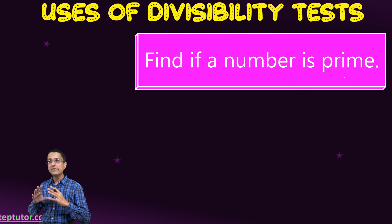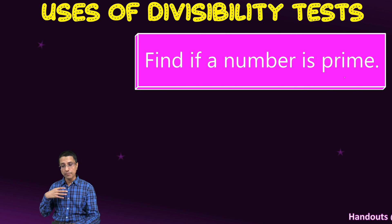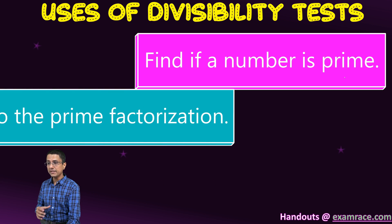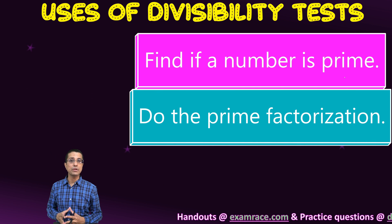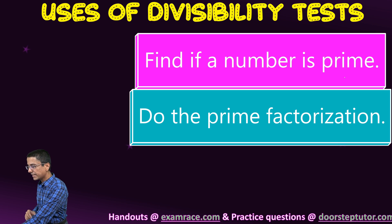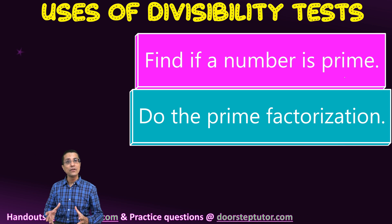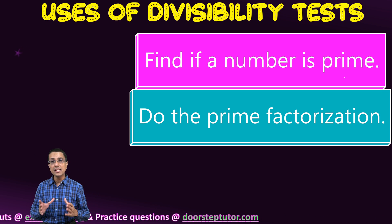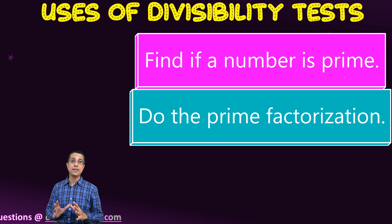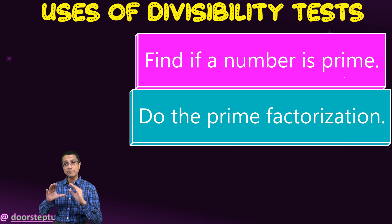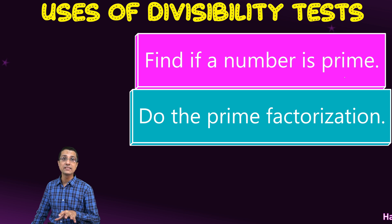These divisibility tests are very important, and with these combination rules you can apply them to bigger numbers — for example, using the divisibility tests for 11 and 4 to test for 44. Divisibility tests are especially useful when finding out if a number is prime and when doing prime factorization of numbers. Use these tests to solve problems quickly, as your teachers expect you to apply them.